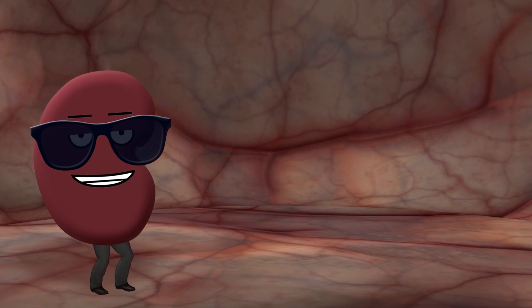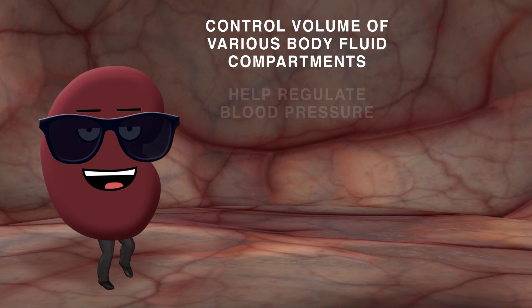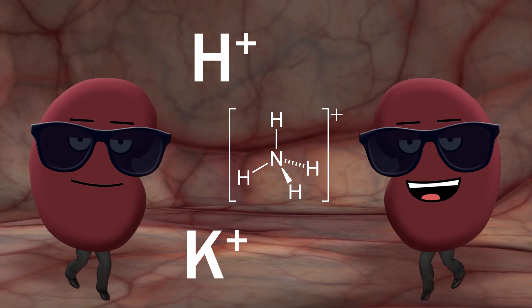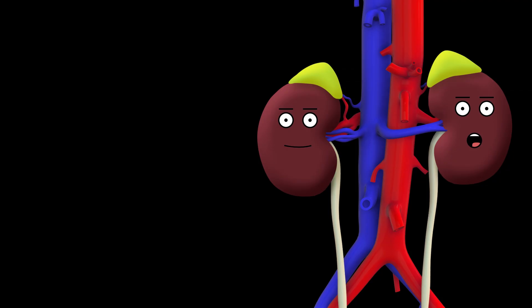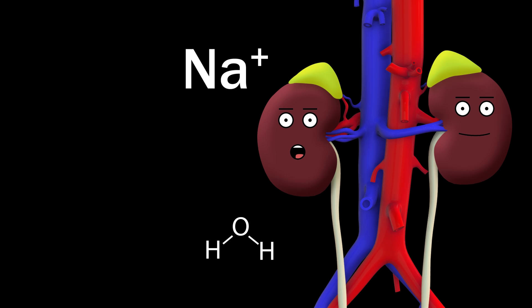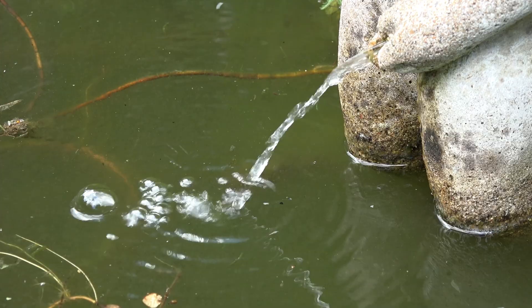Kidneys control the volume of various body fluid compartments, help regulate blood pressure, and remove toxins of all assortments. We excrete metabolic waste and control electrolyte concentrations, expelling hydrogen, ammonium, and potassium in our secretions. Other secretions into urine include urea from protein catabolism and uric acid from nucleic acid metabolism. But water, sodium, glucose, amino acids, and bicarbonate are reabsorbed into the body, not released when you urinate.